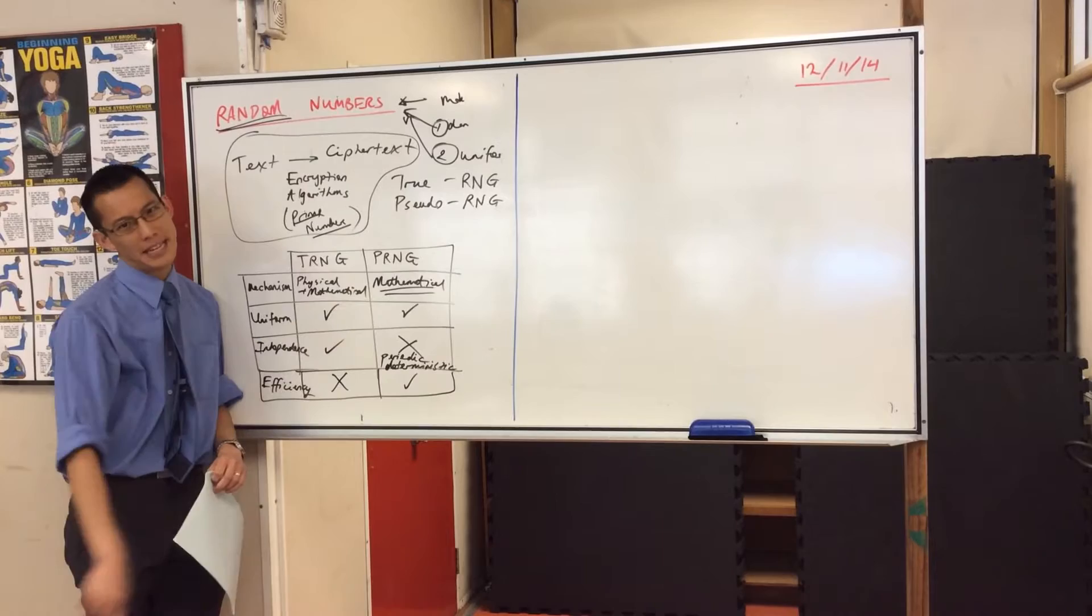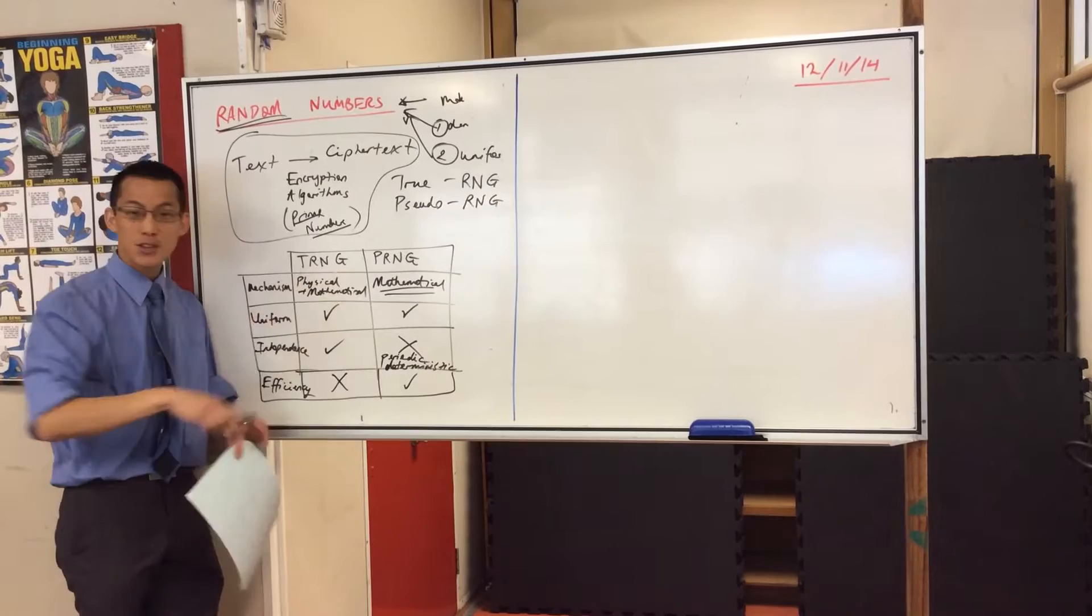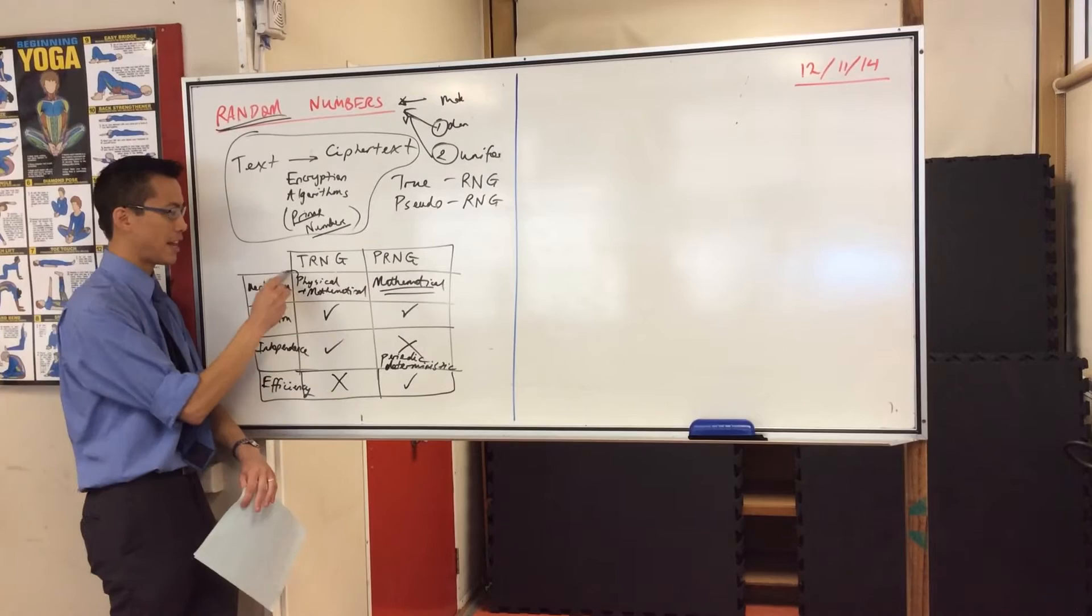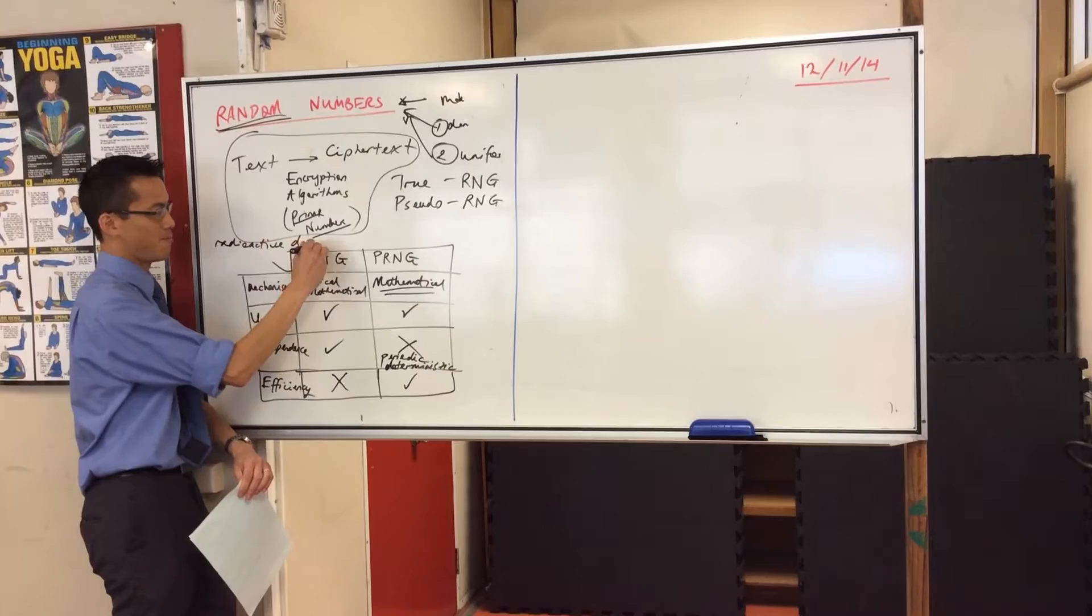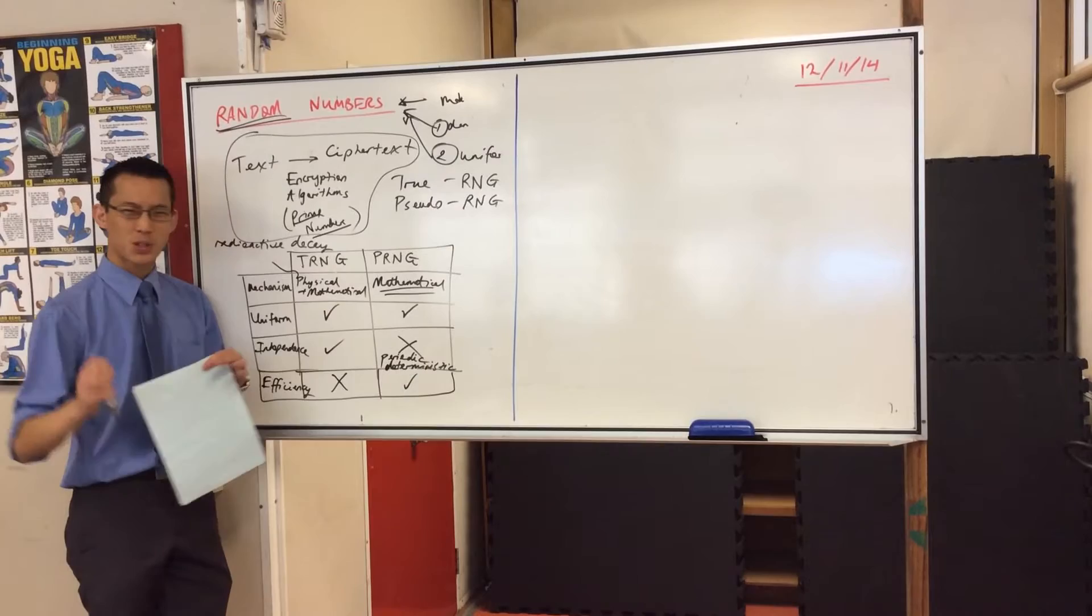In reality, people who use true random number generators can go to random.org I think is a website which does this. It uses far more sophisticated and exotic kinds of physical phenomena. For example, it uses radioactive decay, so if you've got a radioactive particle sending off energy and losing bits of mass, the quantity and frequency at which it does that is sort of predictable but not really predictable, it's quite random.